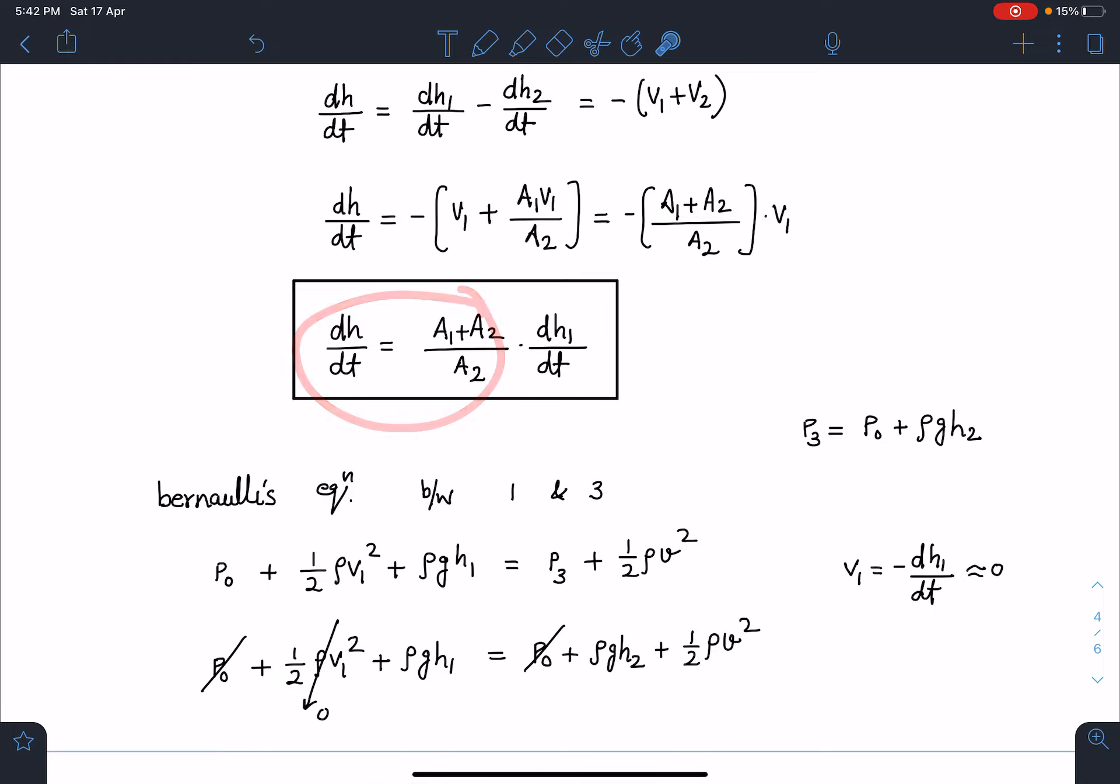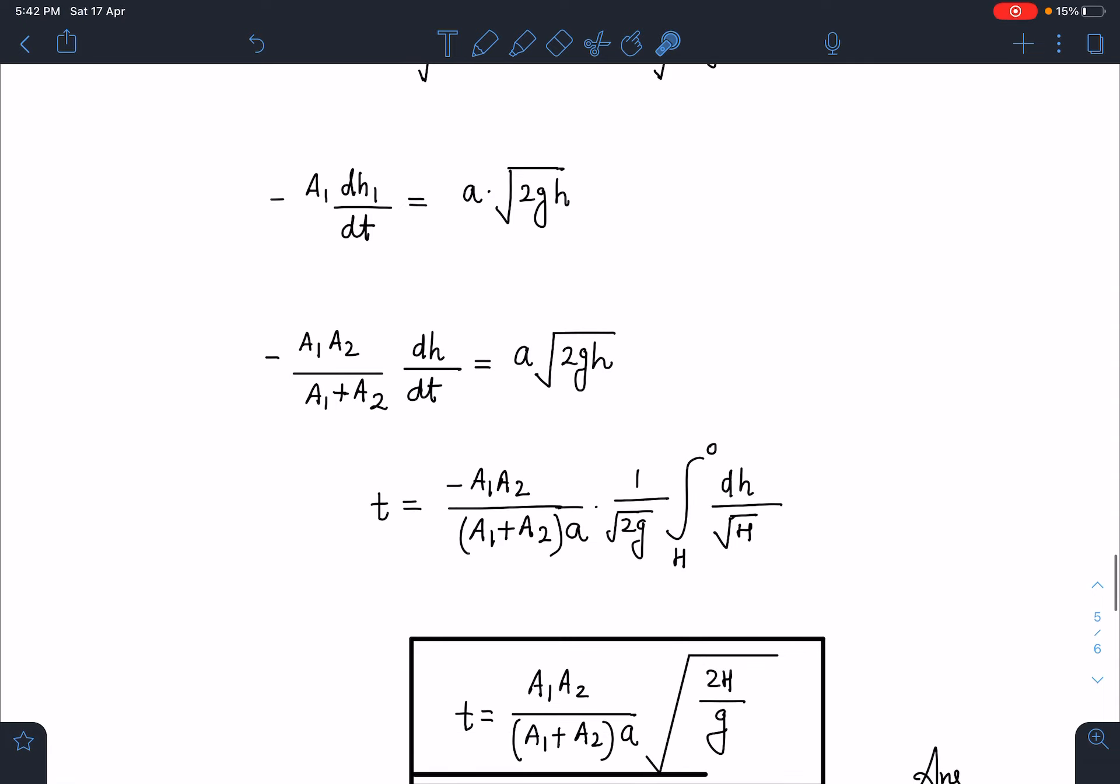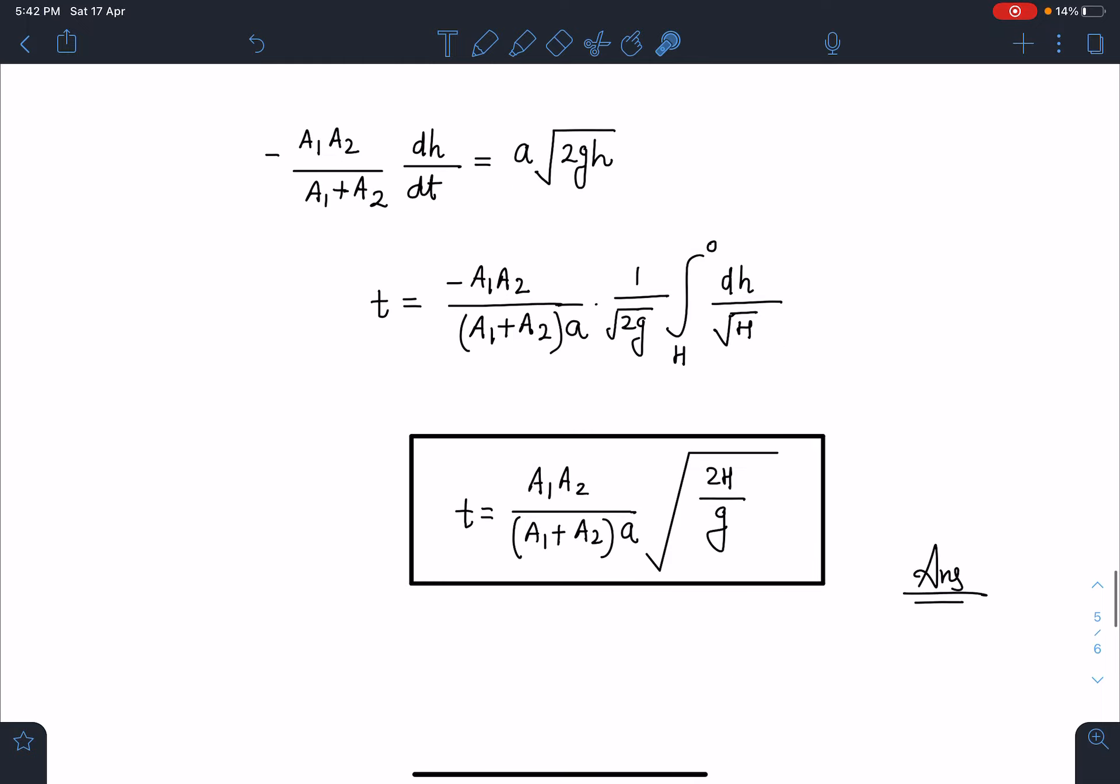This dt will become t and the other side we will have these terms and this will become simply dh/√h. Now h, this small h, is actually the height difference. So initially height difference was capital H and finally this height difference is 0. So the time comes as (A1A2)/(A1 + A2) times small a times √(2H/g). This is going to be the final answer for this problem.